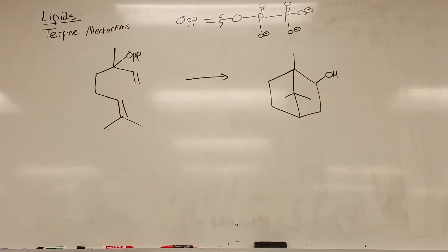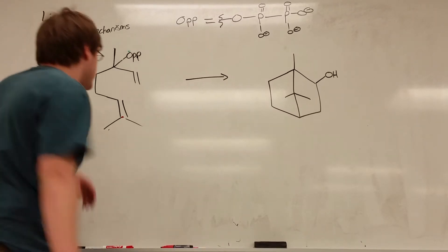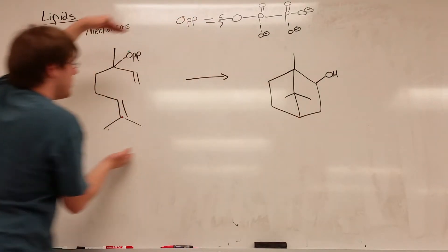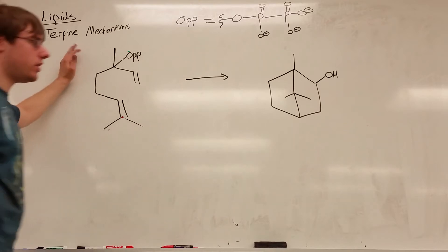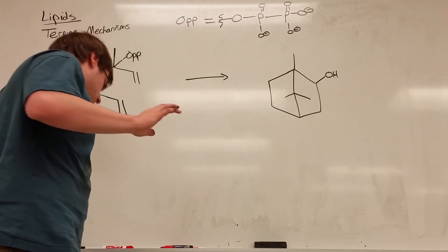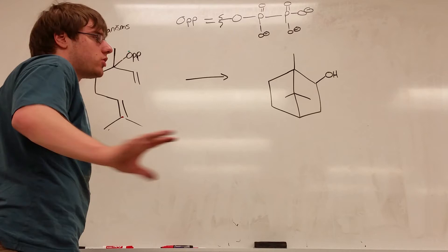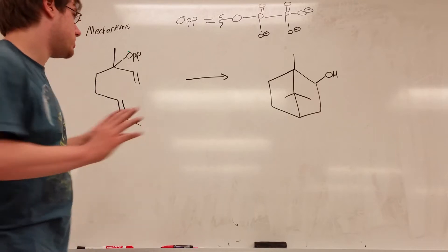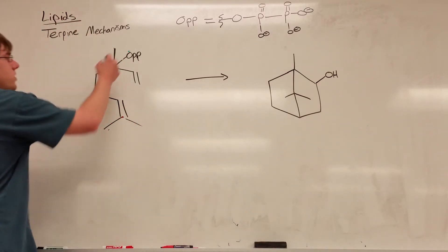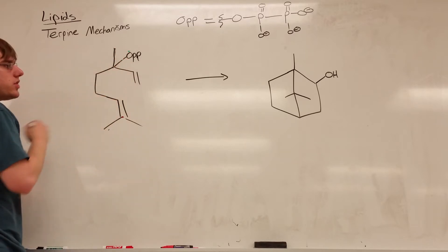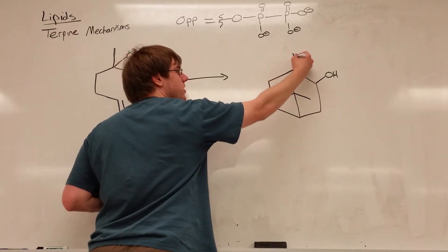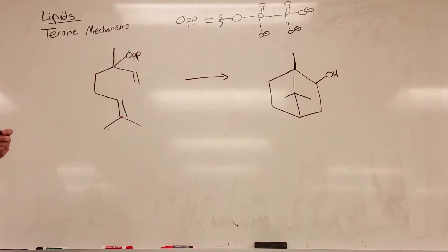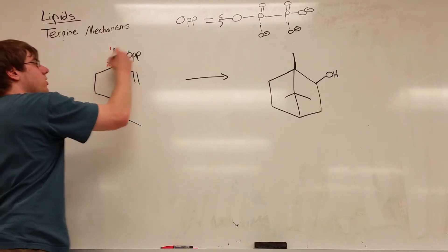Here's another practice example of a terpene mechanism question. We're starting with the same material as the last question but now we're turning it into a scarier-looking product that doesn't look nearly the same. Before we start drawing arrows, the first thing is to try and identify carbons that are the same between the two structures. Start by noticing this carbon up here is just a methyl sticking out, and here we also have just a methyl sticking out. Most likely this methyl and this methyl are the same carbons, so I could number those one and two.